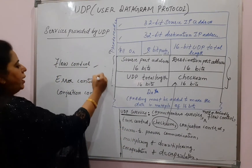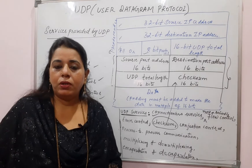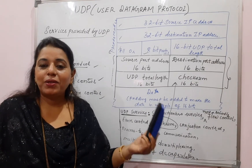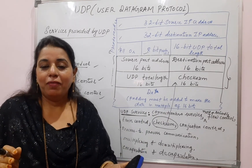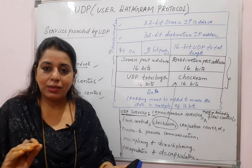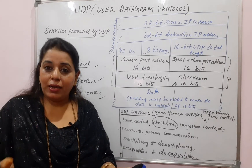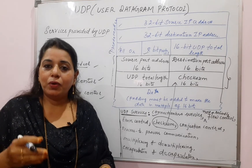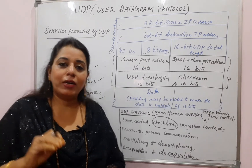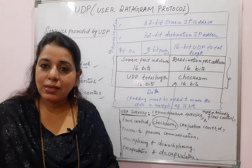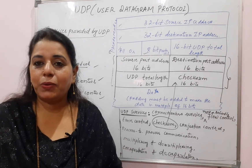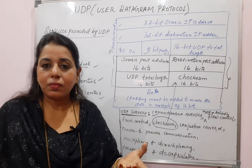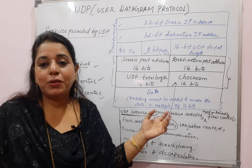Flow control, error control, congestion control, and being unreliable — these are the services which are not provided by UDP. But still, UDP is a very popular protocol. The main reason for using UDP is for short messages where speed is of prime importance. Since there is no connection establishment or termination phase, and the messages are small — up to a maximum of 65,507 bytes — it can be transmitted at a very fast speed. It is mainly used for streaming of media or in computer games.